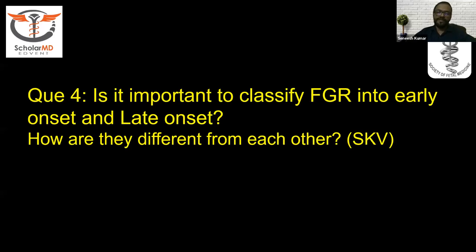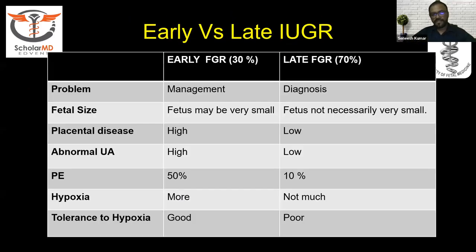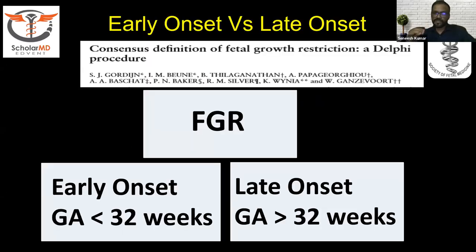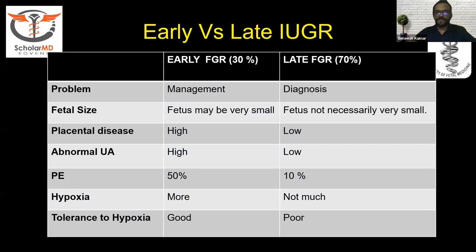In early onset IUGR, the total placental surface available for exchange of nutrients is very restricted — it is basically a perfusion defect. In late onset IUGR, the problem is more of diffusion because the placental injury is less severe. The natural history is very much established for early onset IUGR: a gradual degree of hemodynamic adaptation followed by compensation, decompensation, and severe injury. In late onset IUGR, changes in umbilical artery or ductus venosus Dopplers are almost never seen, and preeclampsia is much less common.